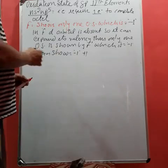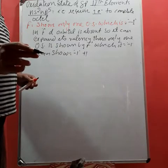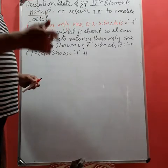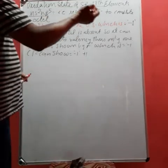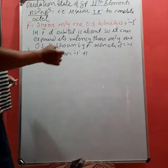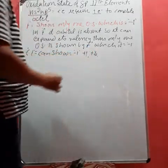Chlorine can show +3 oxidation state. It can also show +5 oxidation state.